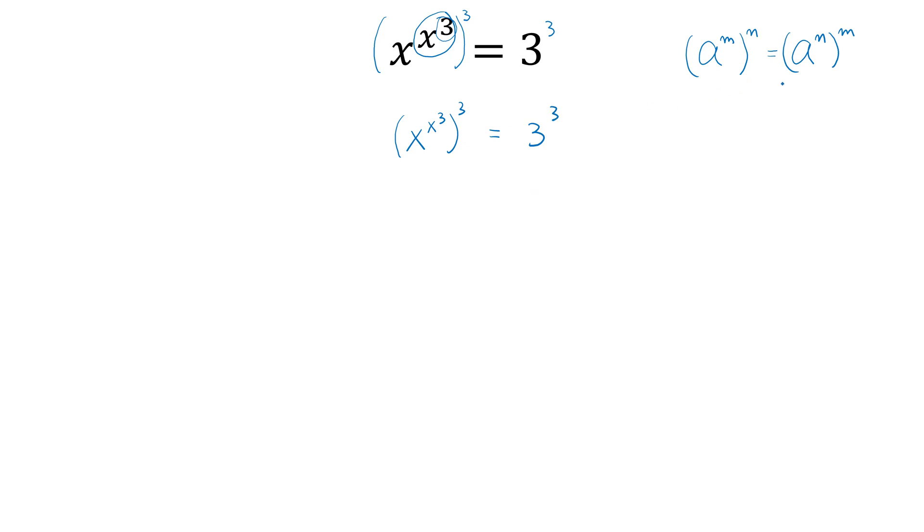Using the law of exponents where a power of m, power of n, equals a power of n, power of m, we can swap this out. This gives us x power of 3 as an exponent, so the right hand side is 3 power of 3. Now we have the same base as an exponent, so both of them are 3.